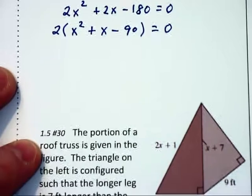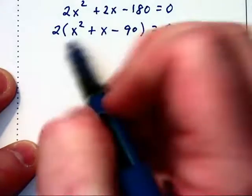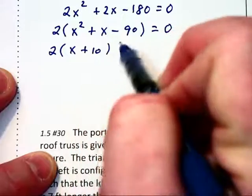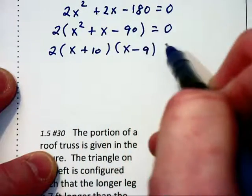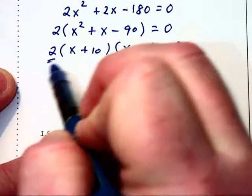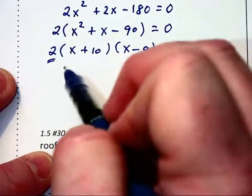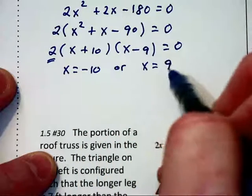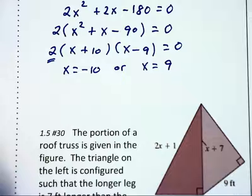Now we can factor the trinomial: 2 times x plus 10 times x minus 9 equals 0. The 2 cannot equal 0 out front, so we ignore it. We find that x equals negative 10 or x equals positive 9. Now don't stop there.